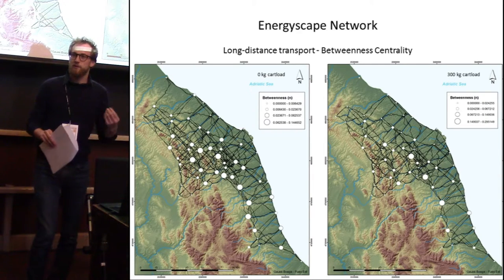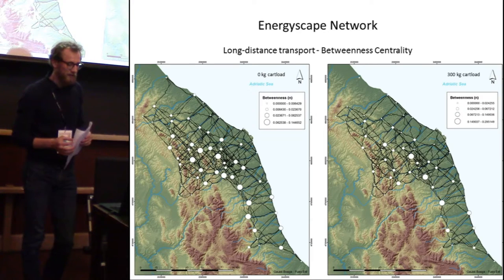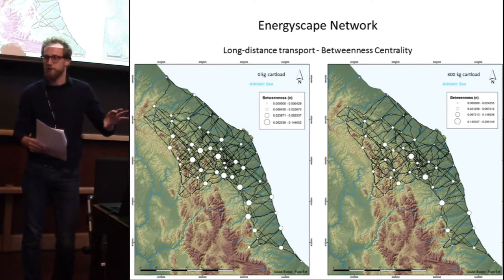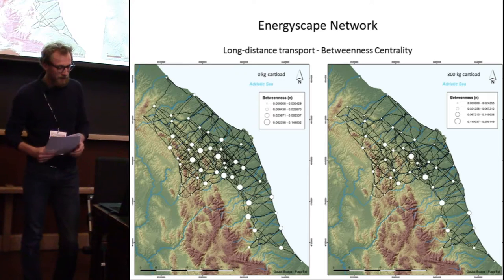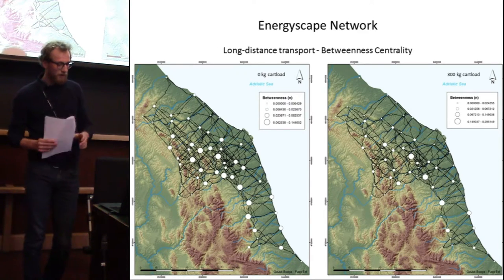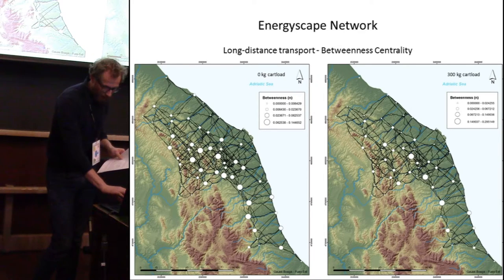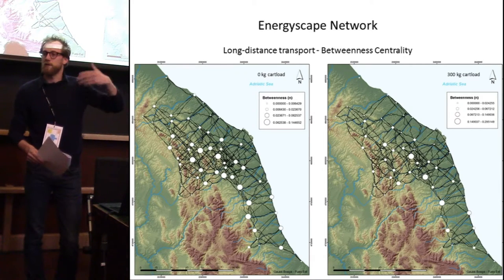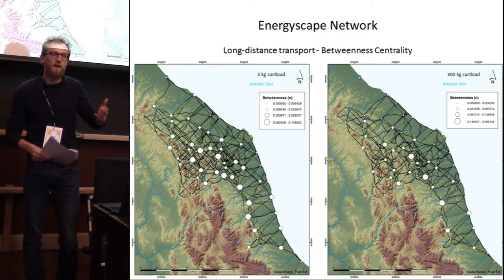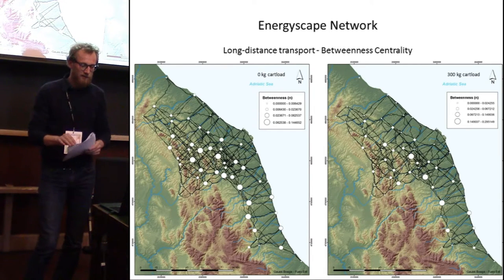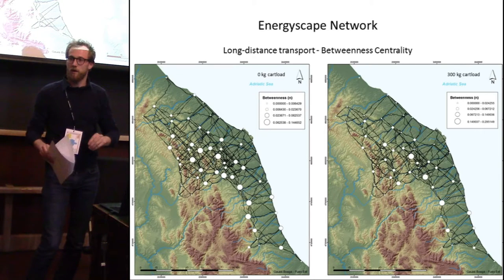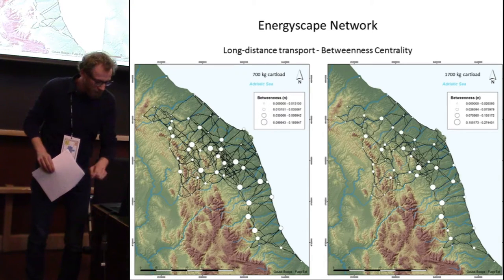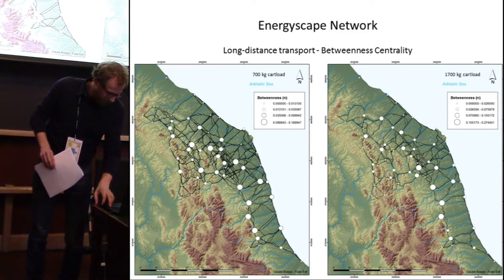The second thing we looked at was betweenness centrality, to identify key or central sites in our networks — specifically for long-distance transport, since we were interested in regional trade. We can see some sites with higher betweenness centrality values, and this trend becomes more pronounced when higher loads are being transported. These are sites essentially located on the north-south routes in the inland, mid-valley area of our study area.